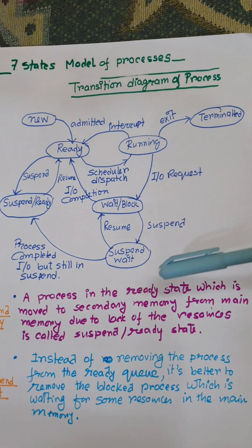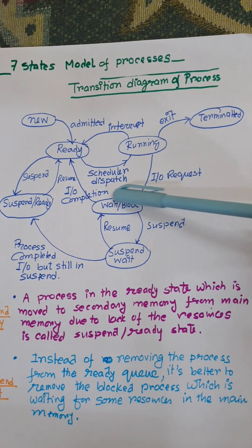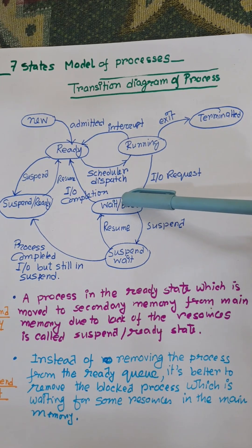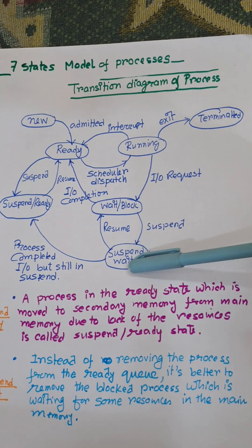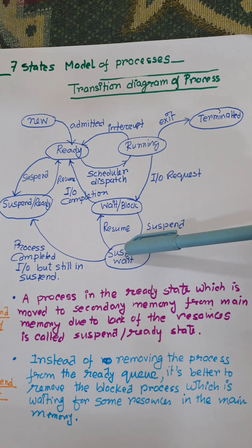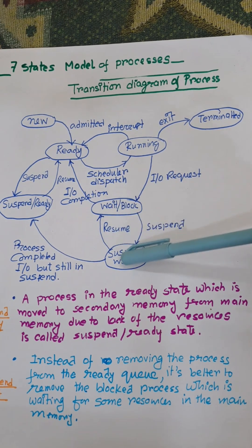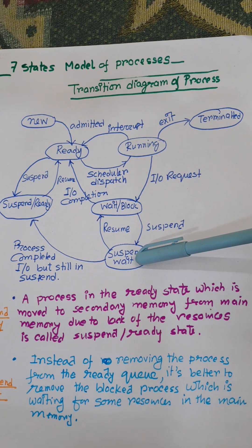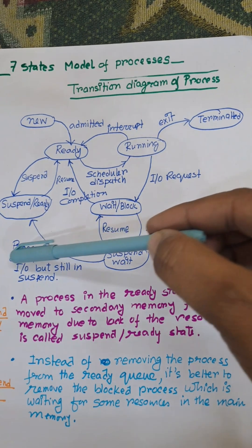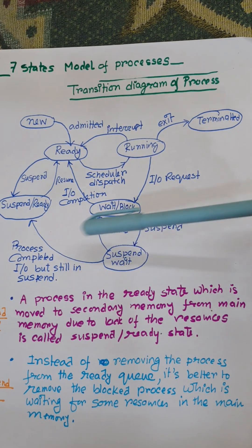But there are two other states: suspend wait and suspend ready. When a process is waiting in the waiting queue, it can be moved to the suspend wait state. From suspend wait, it goes to suspend ready — that means the process has completed its IO but is still in suspend; the process is completed but not in active mode.